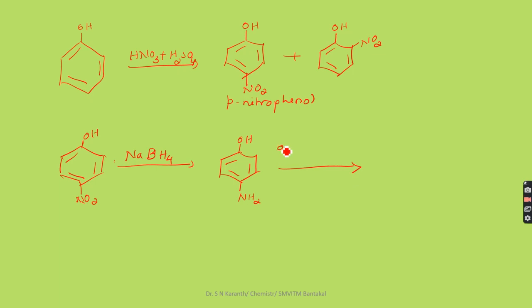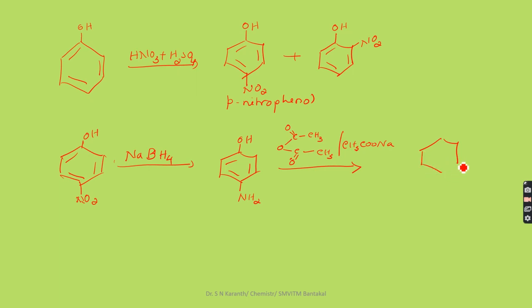Para-aminophenol undergoes acetylation reaction in the presence of acetic anhydride and sodium acetate. The NH amine group reacts with the acetyl group (CH3CO-), and the compound formed is para-acetamol (paracetamol).